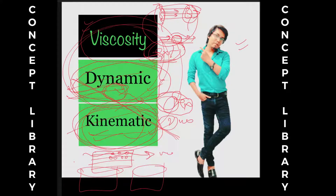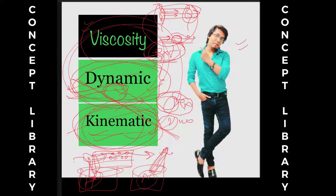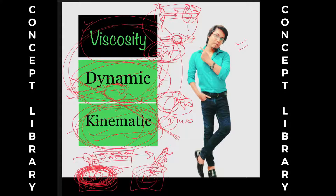Take an example: suppose you have two jars — one with honey and one with mayonnaise. Take a straw and stir both. When you stir the honey and mayonnaise, you are applying external force. Definitely, you'll experience that honey is providing more resistance — honey will not move easily compared to mayonnaise. Since you are applying external force here, that resistance is nothing but dynamic viscosity.